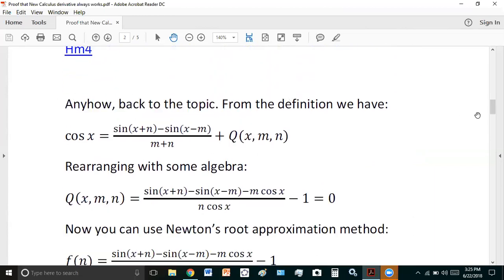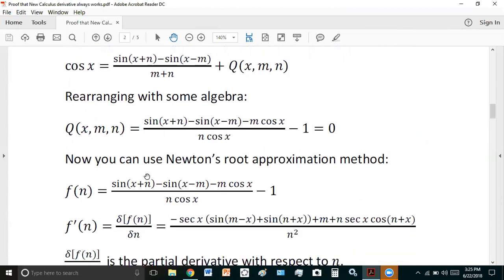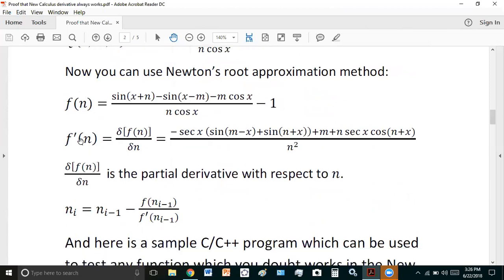But anyhow, back to the topic. From the definition we have the derivative is actually equal to cos x. And rearranging with some algebra, we arrive at this equation here. Now you can use Newton's root approximation method with f(n) as this function and the partial derivative of f(n), and then calculate the corresponding n value for any m value and x that you've been given.